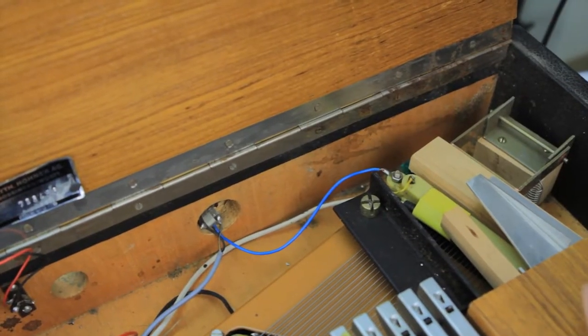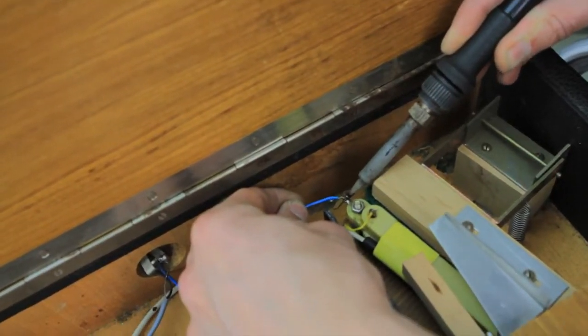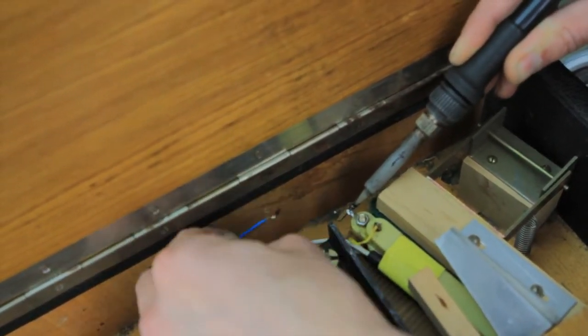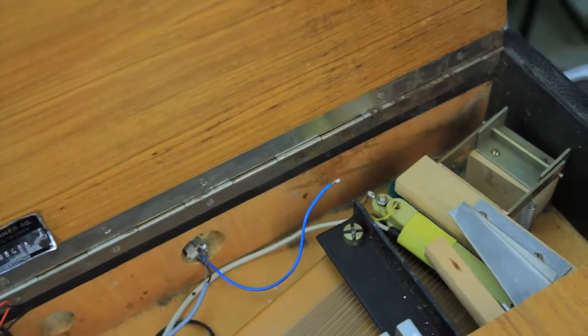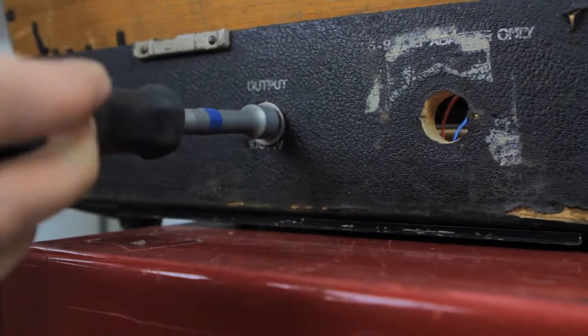Next, we're going to remove the output jack. First, you need to disconnect the blue ground wire going from the jack to the top pickup. You can desolder this, or you can just clip it. Using a half-inch nut driver, remove the nut from the jack and simply pull it into the piano.